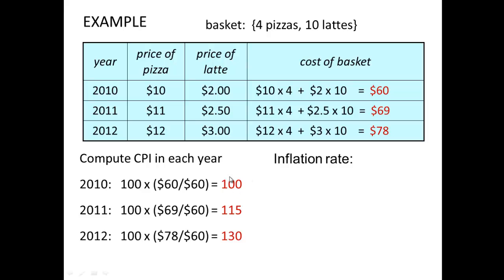This is the CPI index. To interpret it: when the CPI index is 100, that year represents the base year. Then we see it's 115, which means the CPI in real terms for 2011 is higher than 2010. And since we have 130, we can say the CPI rose even more in 2012. That's how we interpret the CPI index.